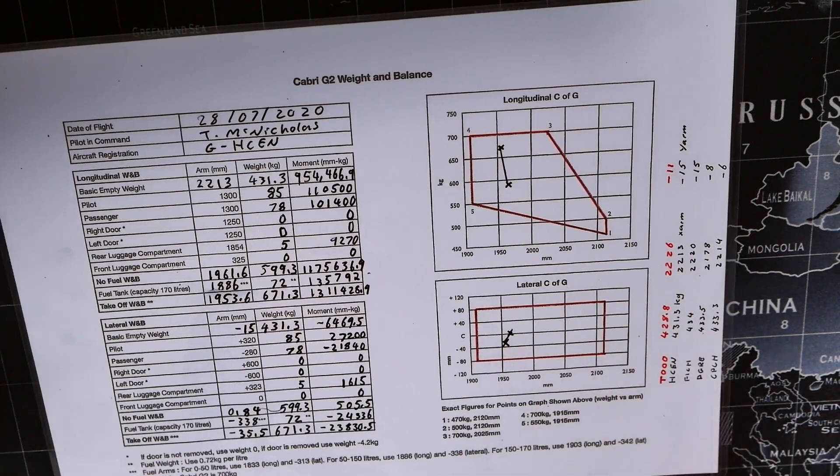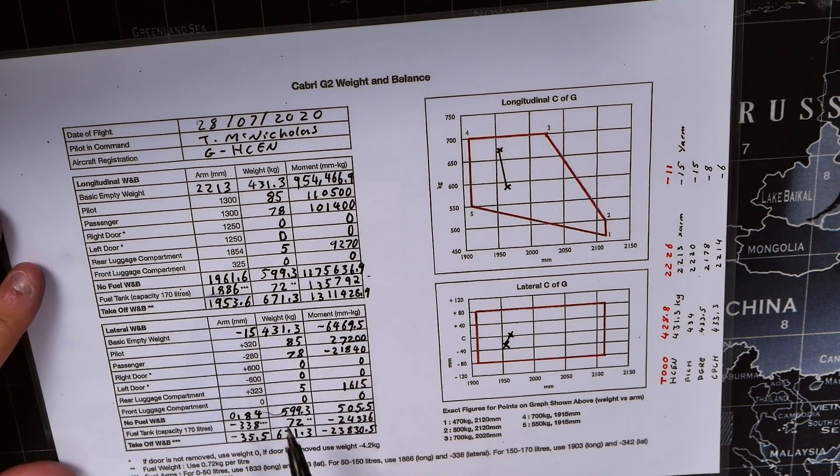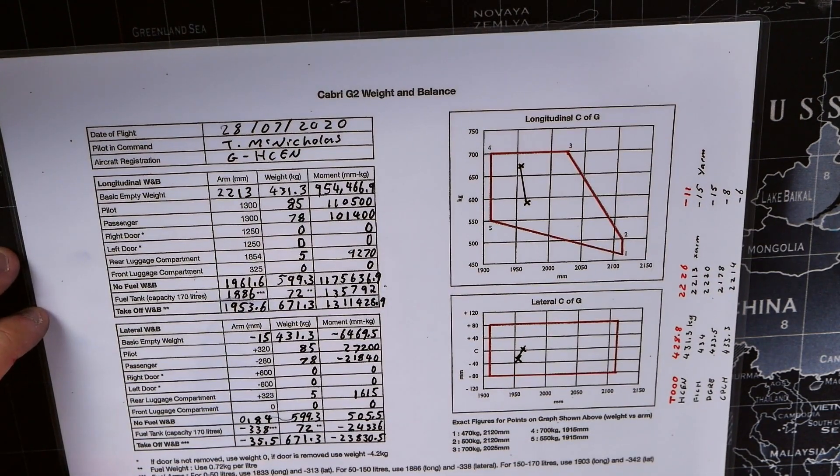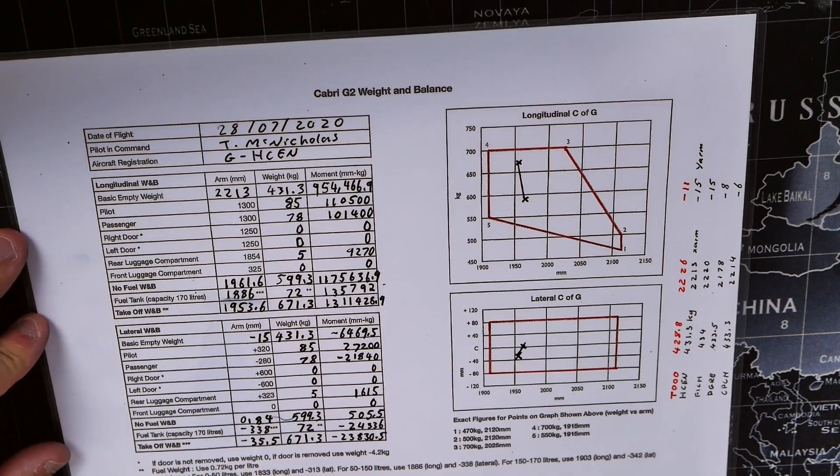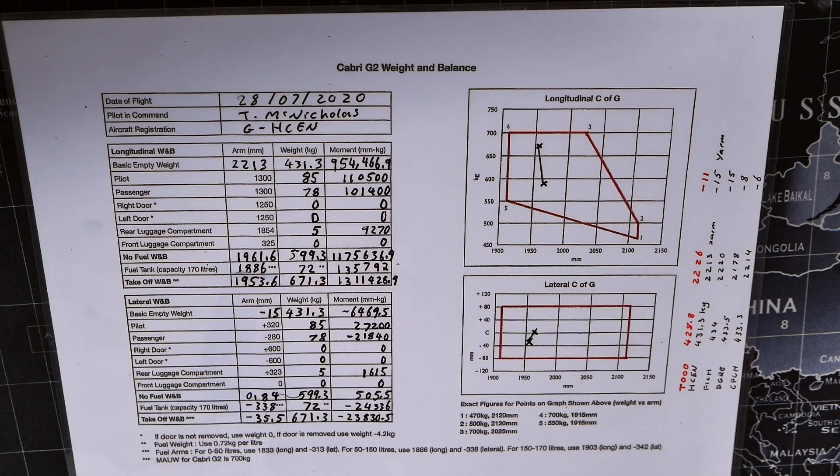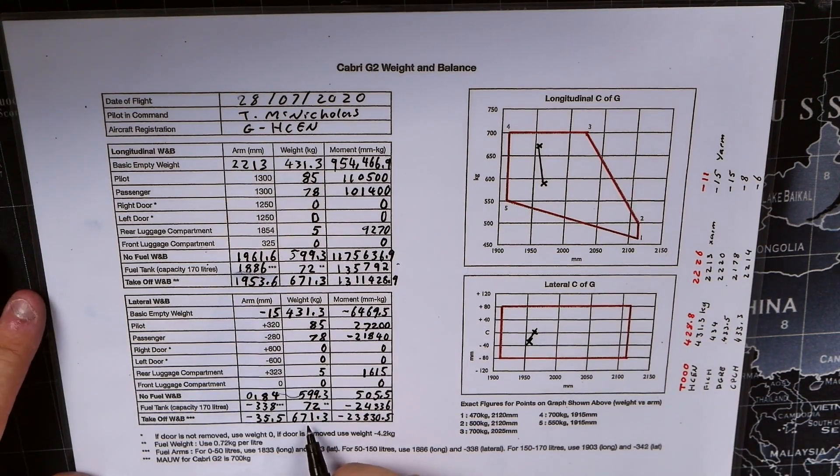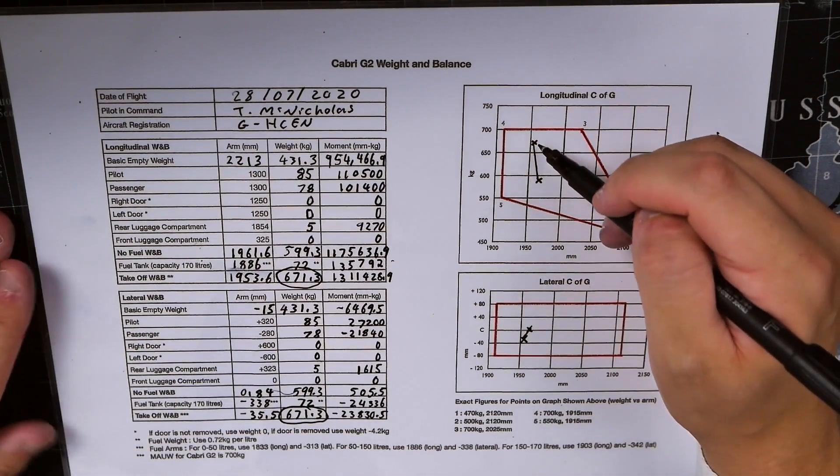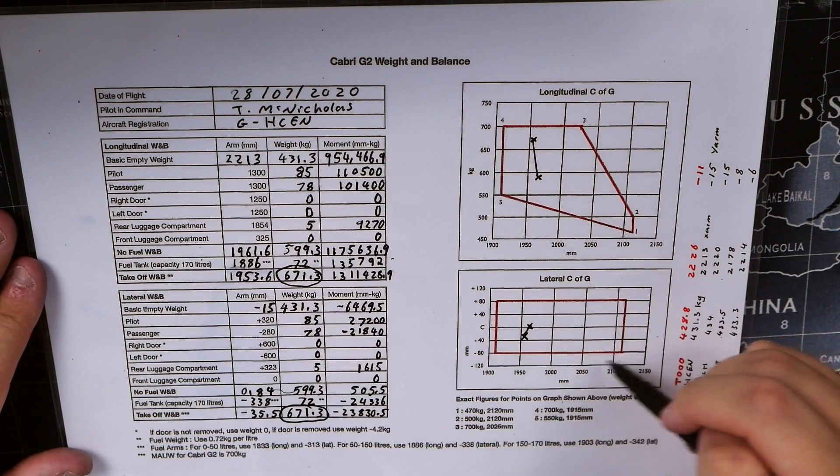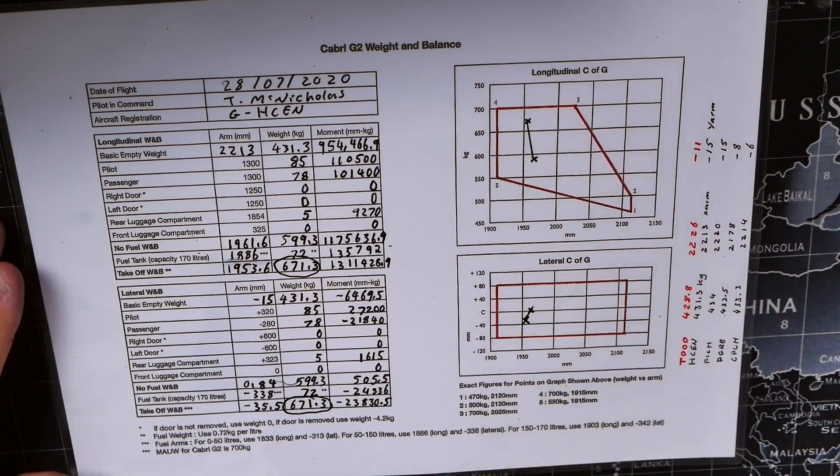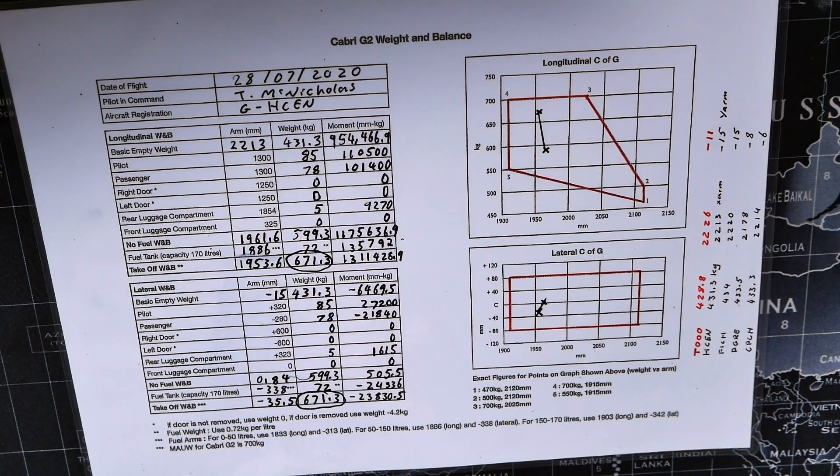The last and final thing to check is that with our takeoff weight, we check that it's not over our maximum all-up takeoff weight. As it says down at the bottom, for the Cabri G2 it's 700 kilograms, so 671.3 kilograms is below 700, so we know that we can take off. To sum this up, we know that we are not over our maximum takeoff weight with these two boxes here, and that throughout the flight the balance of the aircraft stays within the limits as shown on the graphs there.